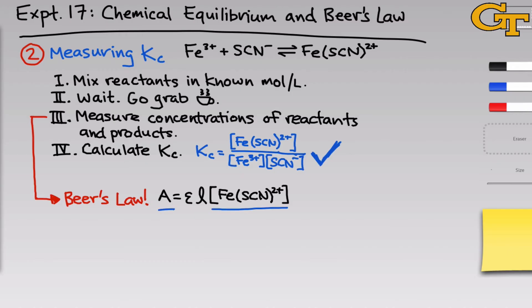It relates A, or the absorbance, to, in our case, the concentration of the only absorbing species, which is the product. Only the complex absorbs light. Fe3+ and SCN- are, for all intents and purposes, transparent, particularly at the wavelength where Fe(SCN)2+ absorbs the strongest. So we'll focus on the concentration of this species in applying Beer's Law.